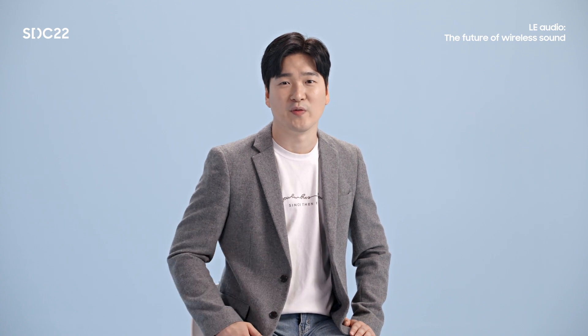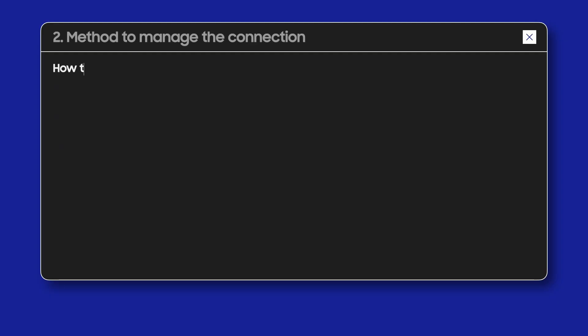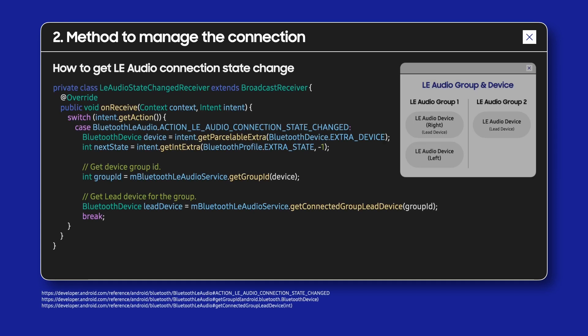Next, let's look at how to get information on the LE Audio connection status. Unlike legacy Bluetooth, LE Audio has two devices — right and left earbuds — so they have their own connection status and both are managed as a group. You can receive connection status for each of the devices in the same group through an intent. API level 33 provides GetGroupID API and GetConnectedGroupLeadDevice API, where you can check group ID and lead device using them.